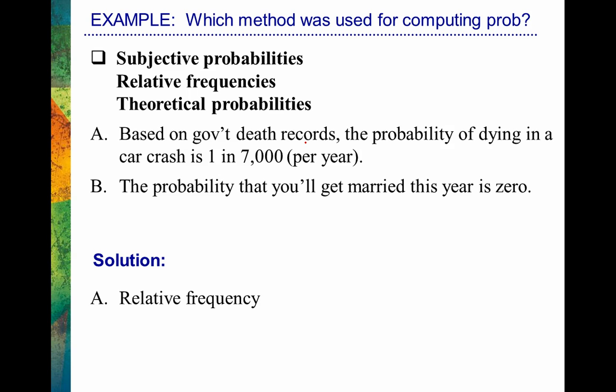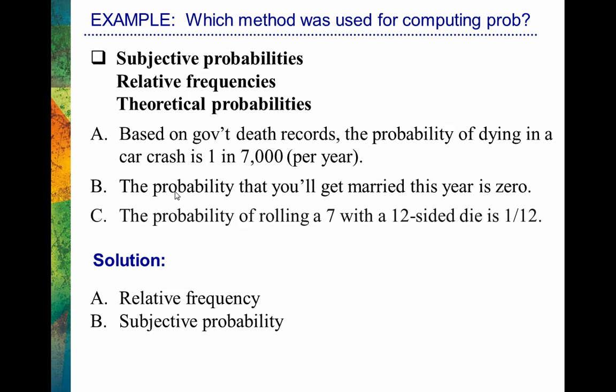What's the probability that you'll get married this year? If you say that probability is zero, that's not something we can look at over the long run — like, over the past 25 years in exactly the same situation, what proportion of the times have you gotten married? Computing that would be a relative frequency. This really is just a guess, an estimate of the probability. You know yourself and your situation, so the guess isn't based on nothing, but it's still just an estimate. So that would be a subjective probability, or personal probability.